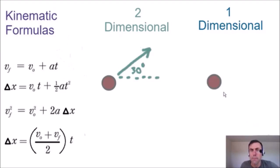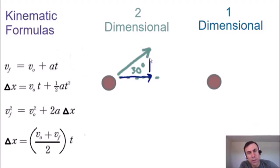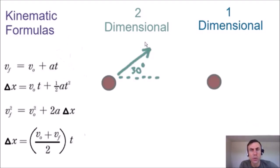With two-dimensional projectile motion, the projectile can move both vertically and horizontally. Like this ball, for example, which is moving 30 degrees up from the horizontal — so it's moving horizontally to the right and vertically up at the same time. That is the main difference between two-dimensional and one-dimensional projectile motion.